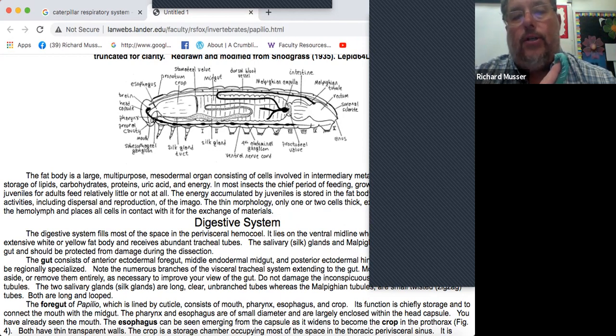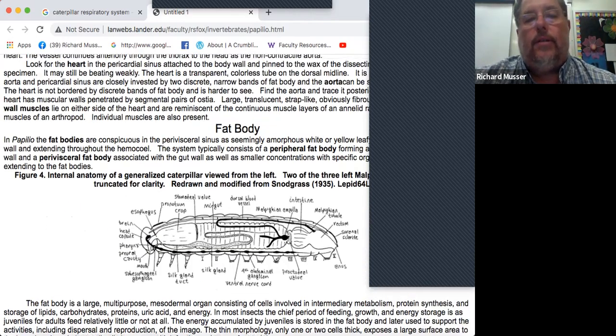The salivary glands are huge. They'll actually leave from their mouth and float around in their body and can lead all the way down to the last abdominal segment. There's several segments, about eight of them, and three thoracic segments.